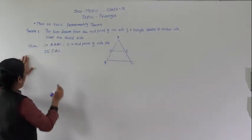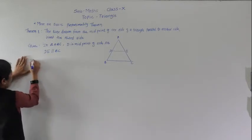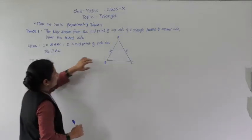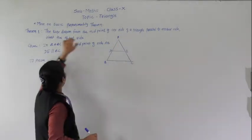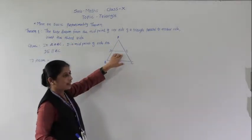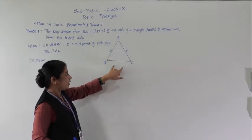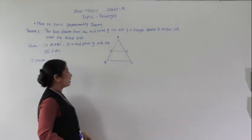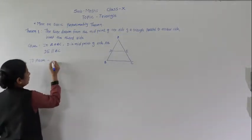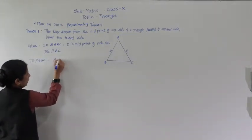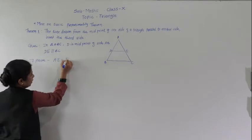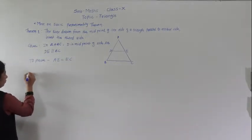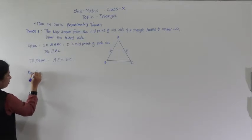Now what we have to prove? To prove: AE equals EC — that is, the line parallel to one side of a triangle bisects the third side. So we have to prove AE equals EC. Now, proof.